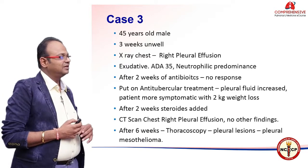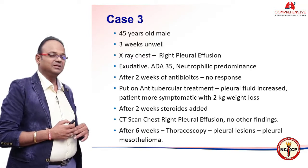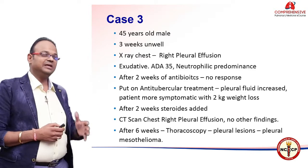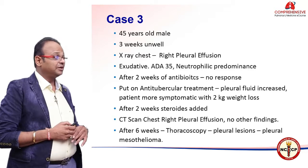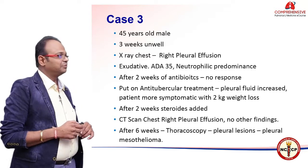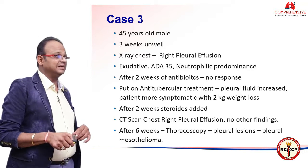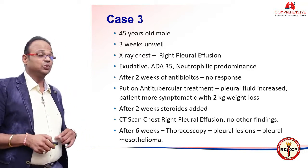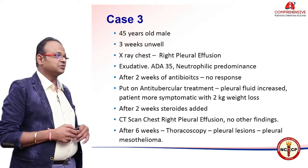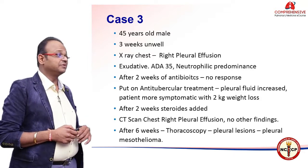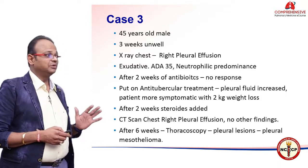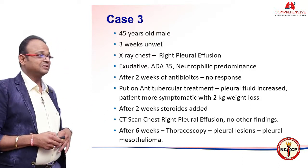Case 3: a 45-year-old male, unwell for about 3 weeks, X-ray showing right pleural effusion. ADA was about 35 with neutrophilic predominance. After 2 weeks of antibiotics, no response; put on AKT. Pleural fluid increased and patient became more symptomatic with 2 kg weight loss. Steroids were added. CT scan showed right pleural effusion with no other findings. After 6 weeks, thoracoscopy was performed — pleural lesions were found and the patient was ultimately diagnosed with mesothelioma.